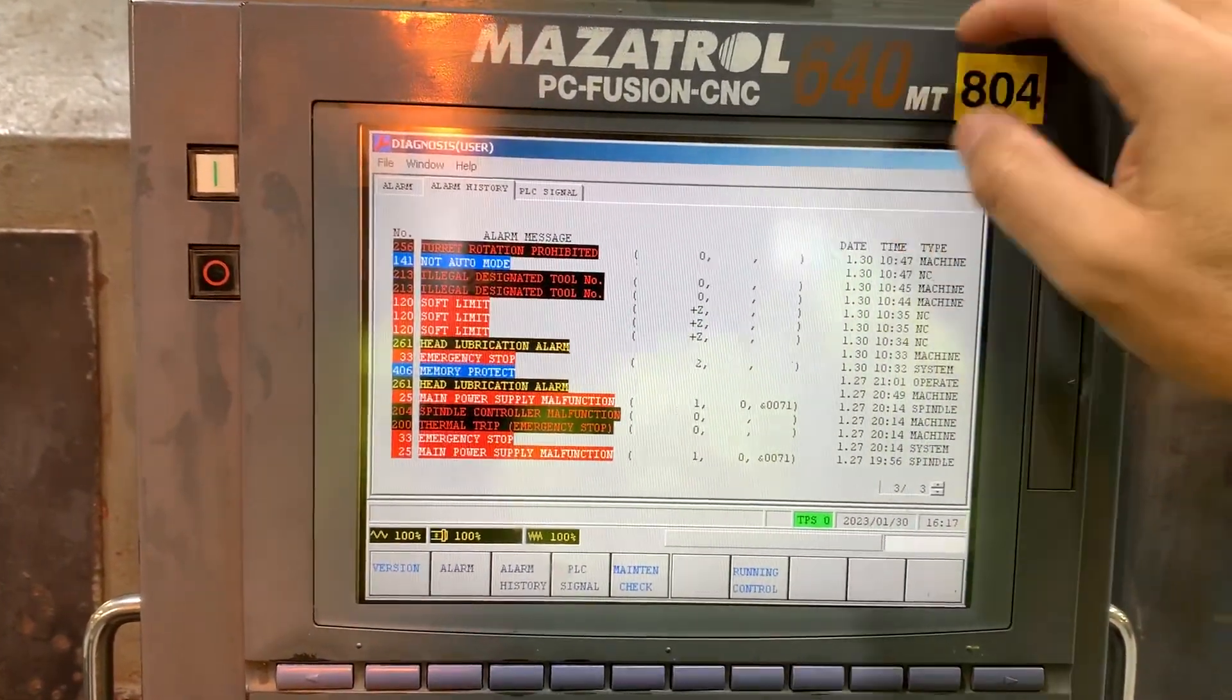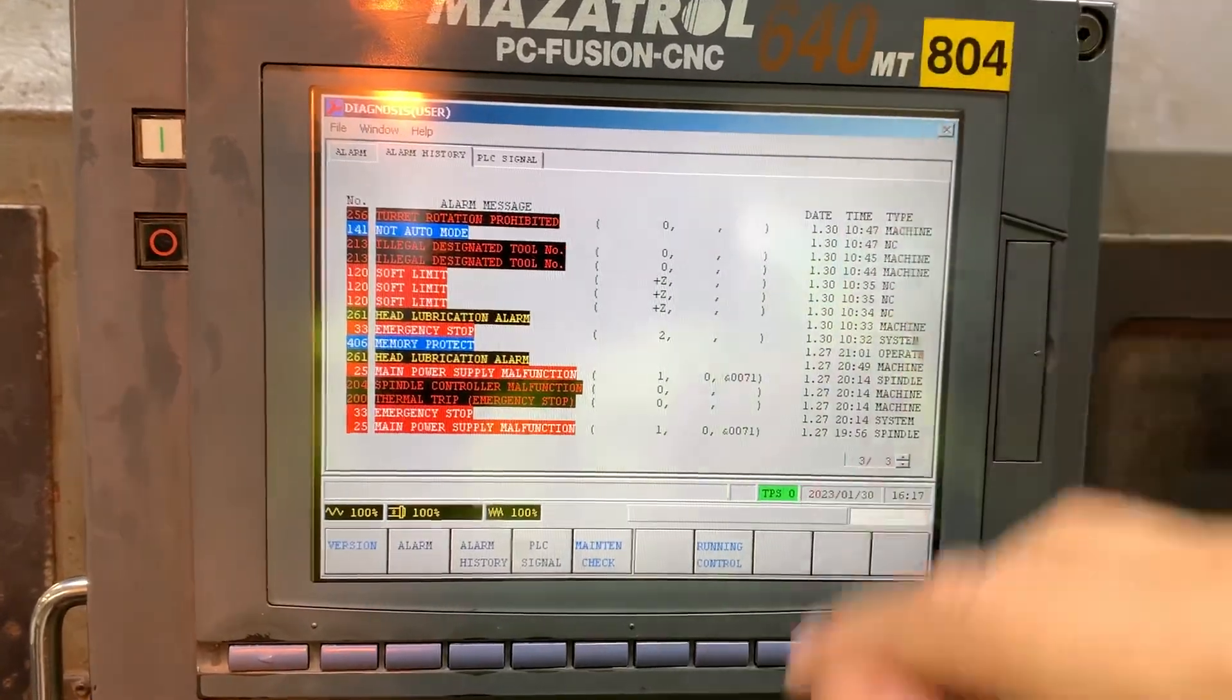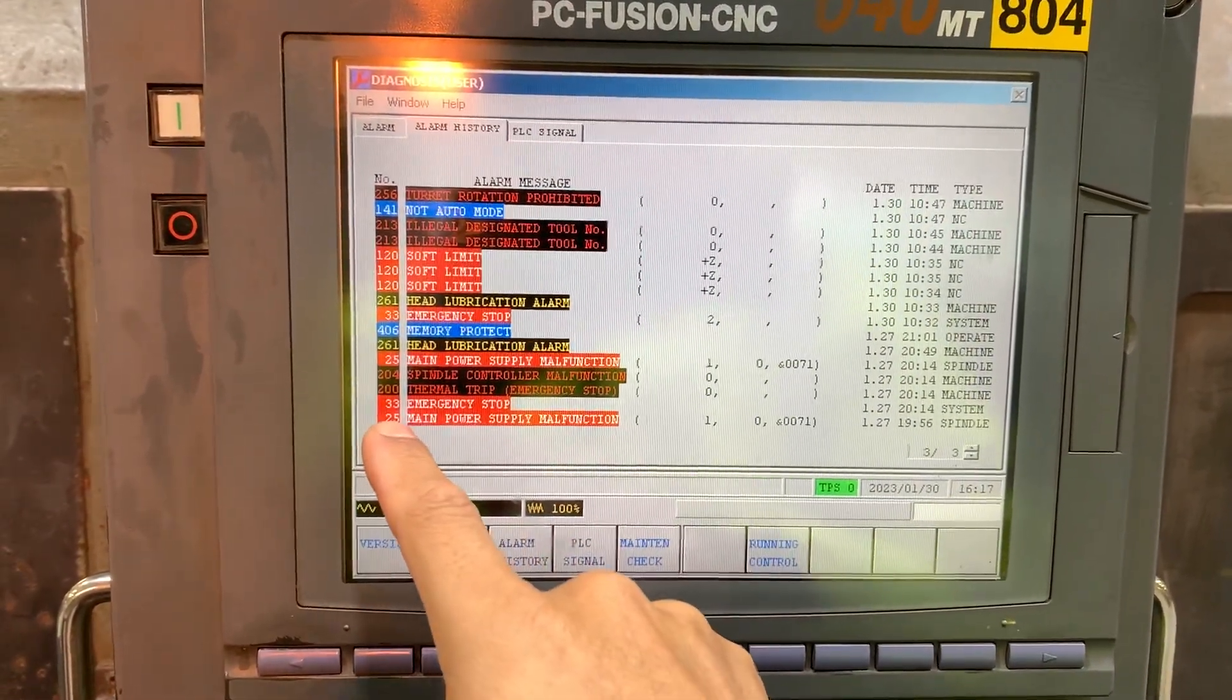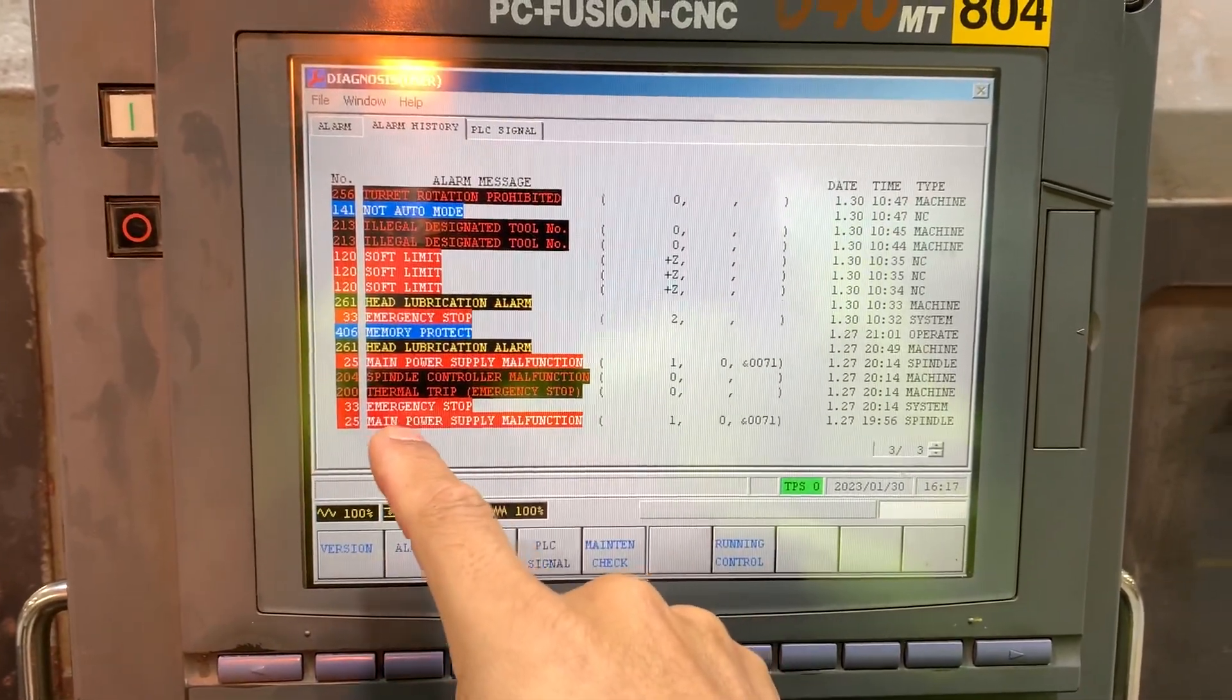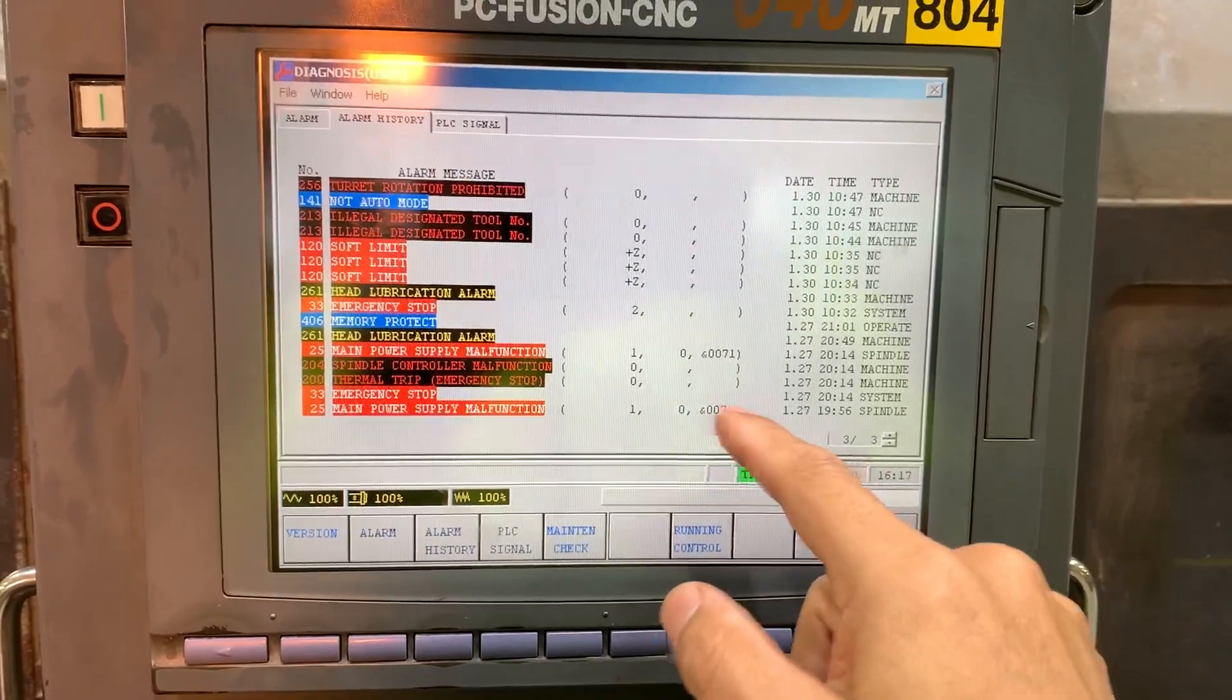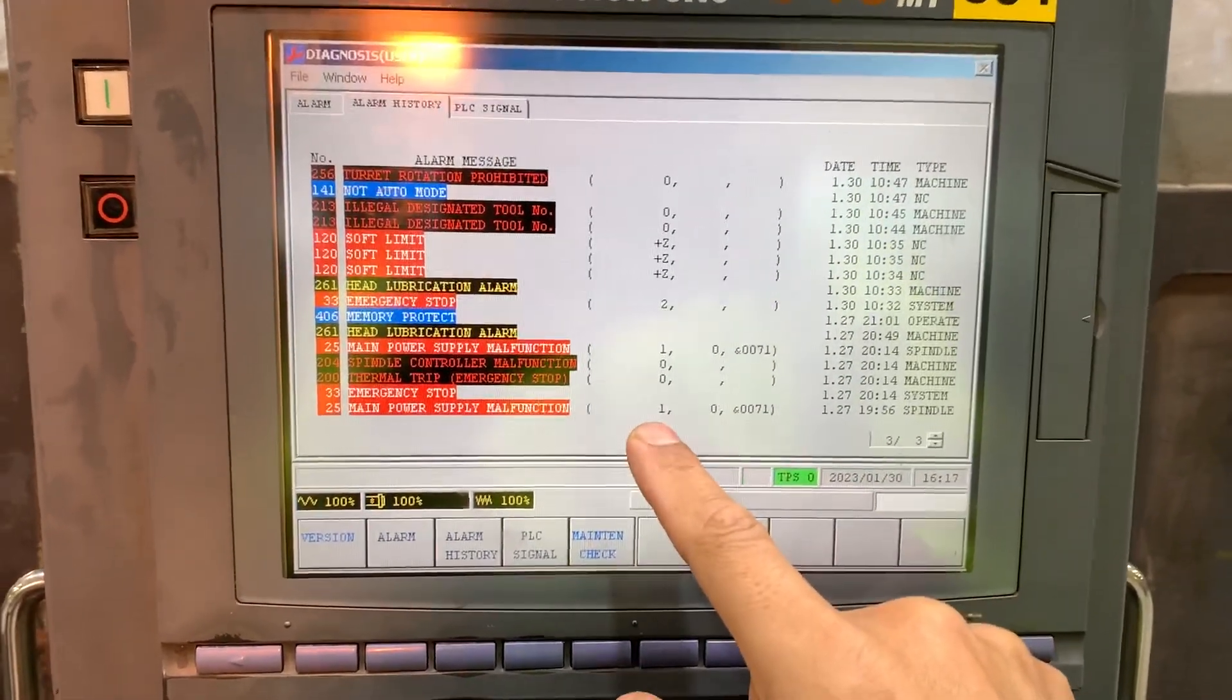This Mazatrol 640T has an alarm 25, main power supply malfunction code 71. This number refers to the spindle number.